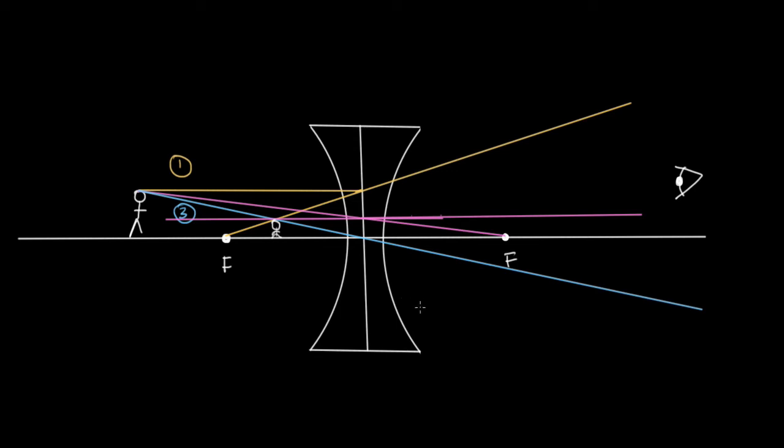Now, as we move this diverging lens closer and closer to the eye, I've left it as a task for you to show that the little man gets smaller and smaller.